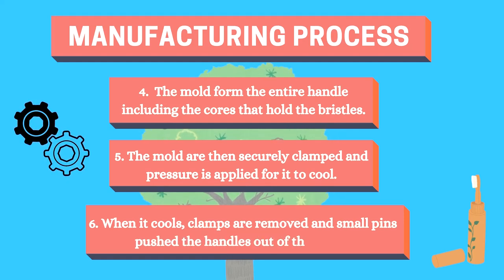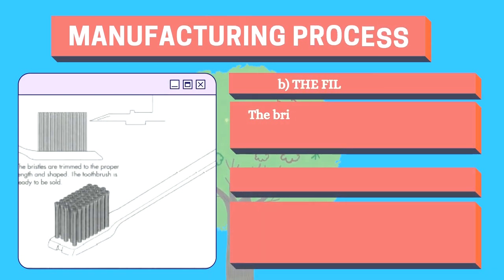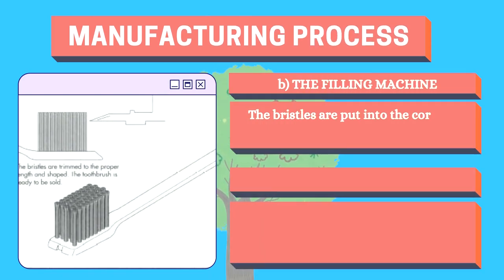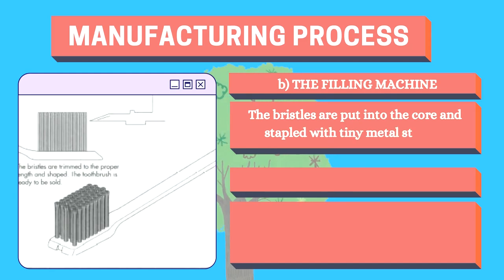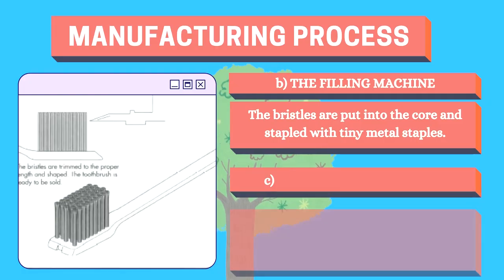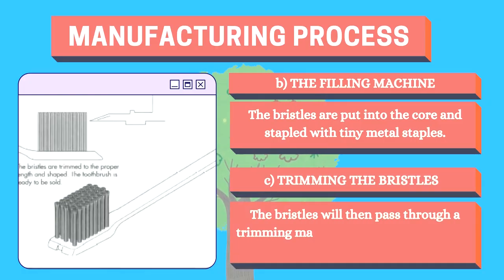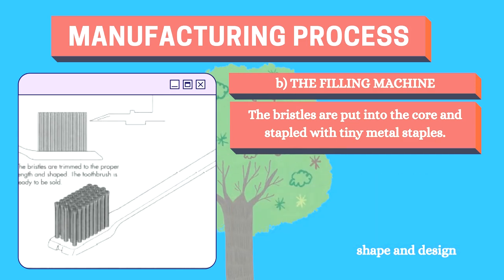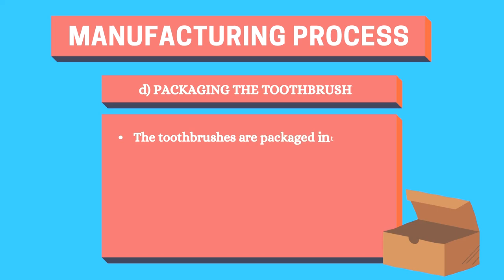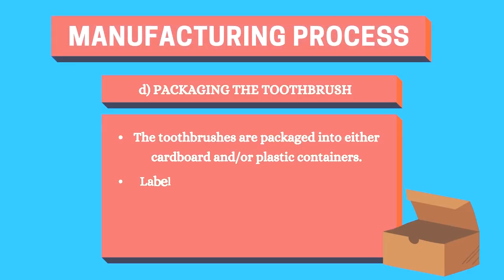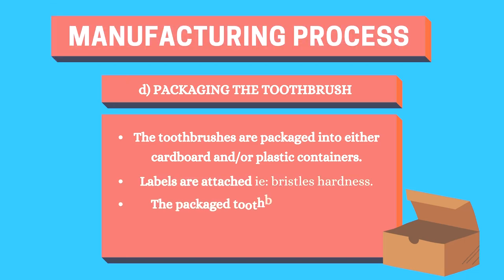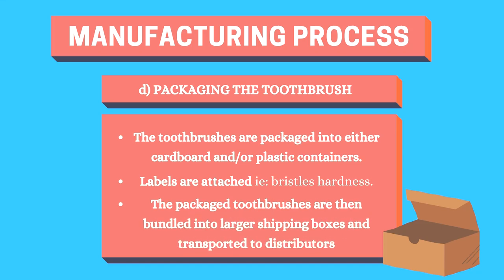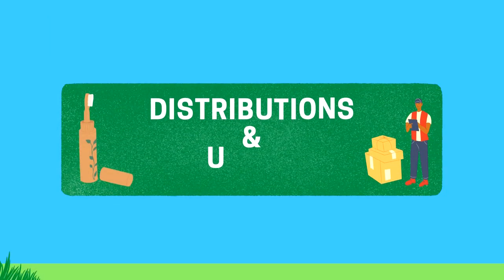Once cooled, clamps are removed and small pins push the handles out of the mold. The handles are then transferred to a filling machine, where bristles are put into the cores and stapled with tiny metal staples. Next, the bristles pass through a trimming machine that slices them to the correct length, shape, and design. Finally, in the packaging stage, toothbrushes are packaged into cardboard or plastic containers with labels indicating bristle hardness, then bundled into larger shipping boxes for transport to distributors.